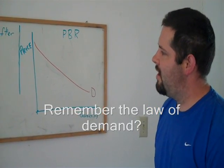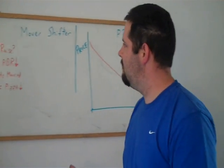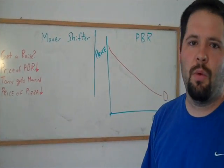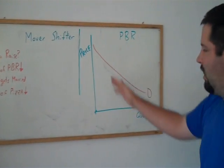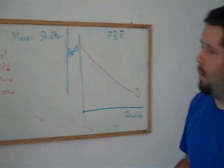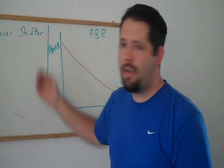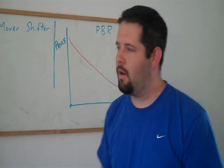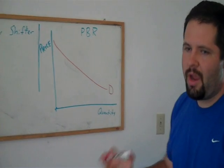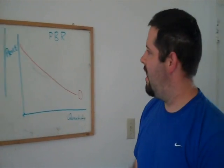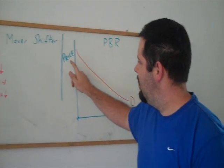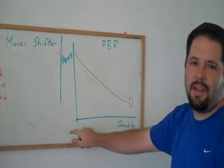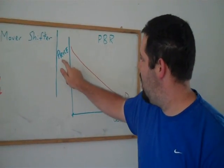Now, the question becomes, what happens if the consumer that we're modeling here gets a raise? Do we move along the demand curve? Is it a mover? Or does the demand curve shift? Is it a shifter? Well, the important way to understand the distinction between a mover and a shifter is that the movers are on the axis, quantity and price.